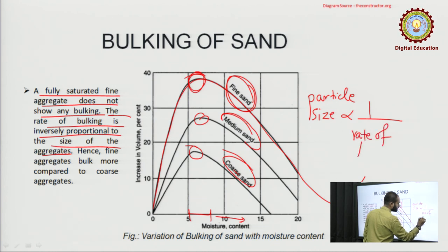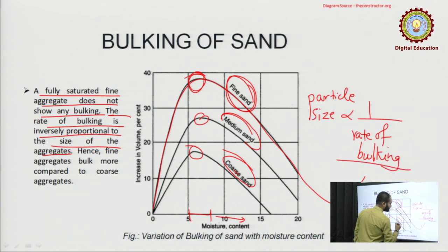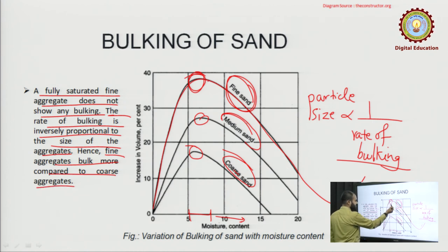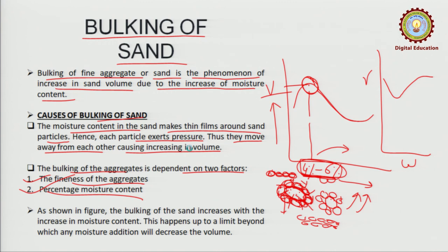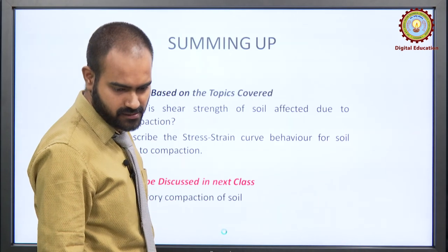Fine aggregates bulk more compared to coarse aggregates, as seen in the diagram — the finest shows the highest bulking. The bulking of sand increases with the increase in moisture content up to a limit, beyond which any further moisture addition will decrease the volume. A fully saturated fine aggregate does not show any bulking; once the 4–6% range is exceeded, the soil again behaves normally with no bulking.